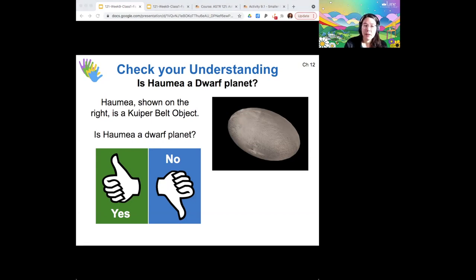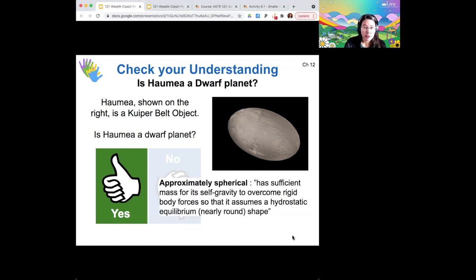All right. So I see most votes for no. And if I didn't already know the answer to this, I would have to agree with you. But for whatever reason, NASA thinks that Haumea is spherical enough to be classified as a dwarf planet. So even our definition of approximately spherical might just refer to the shape.